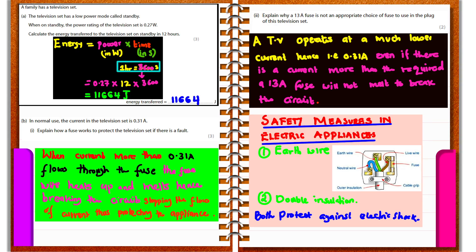In normal use, the current in the television is 0.31 amperes. To explain how a fuse protects the television: if there is a fault, a current surge occurs. The fuse is rated to allow up to 0.31 amperes. If more current flows, the fuse heats up, melting its thin wire and breaking the circuit, stopping the flow of current and protecting the appliance.